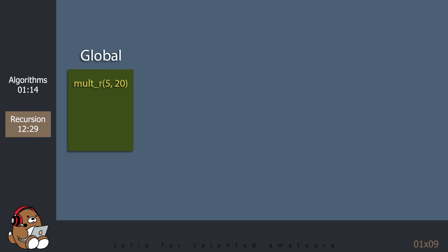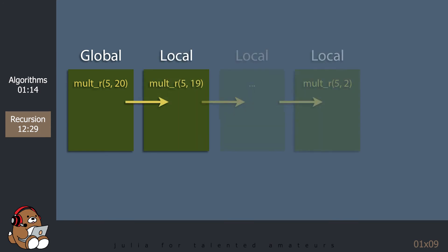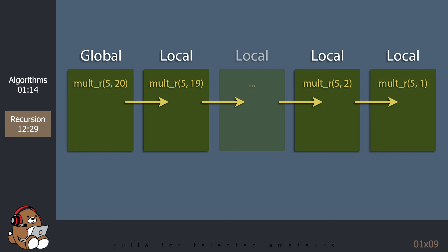In terms of memory usage, each recursive call to a function creates its own local scope, so the bindings of variables in a local scope are not changed by recursive calls. The flow of control is passed back to the previous scope once the function call returns a value.